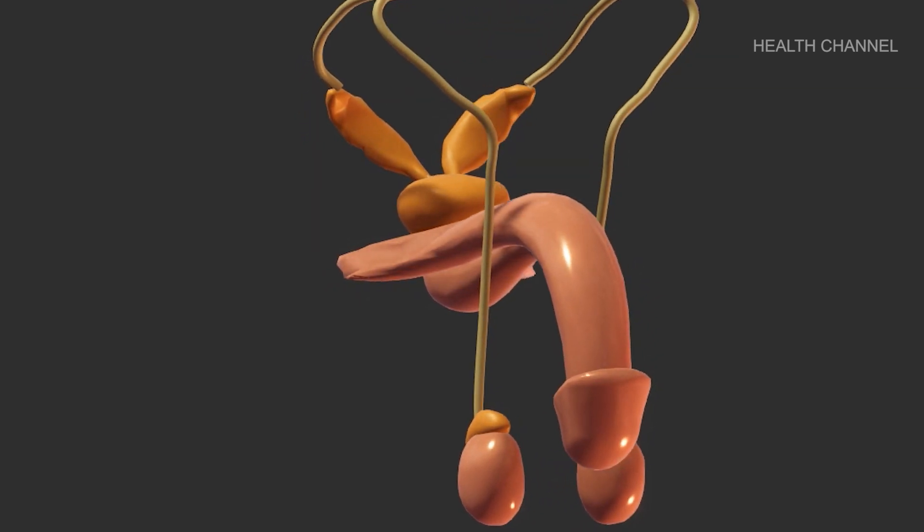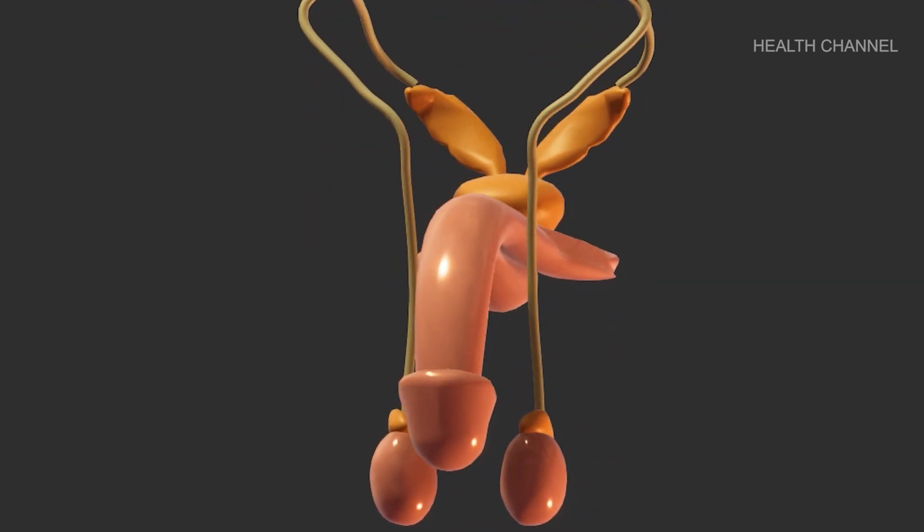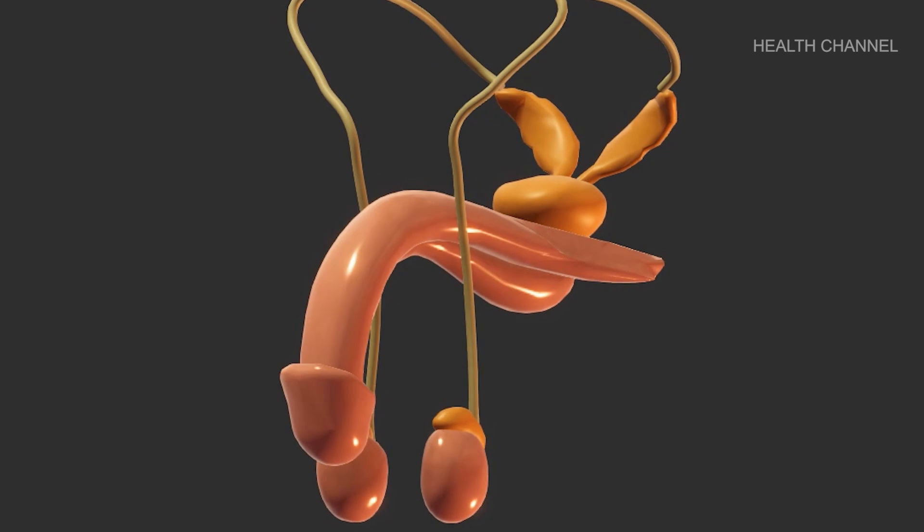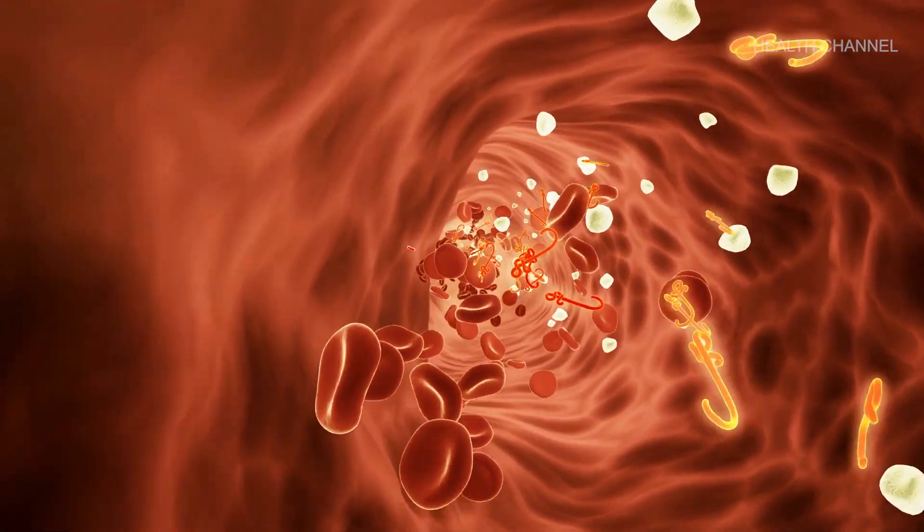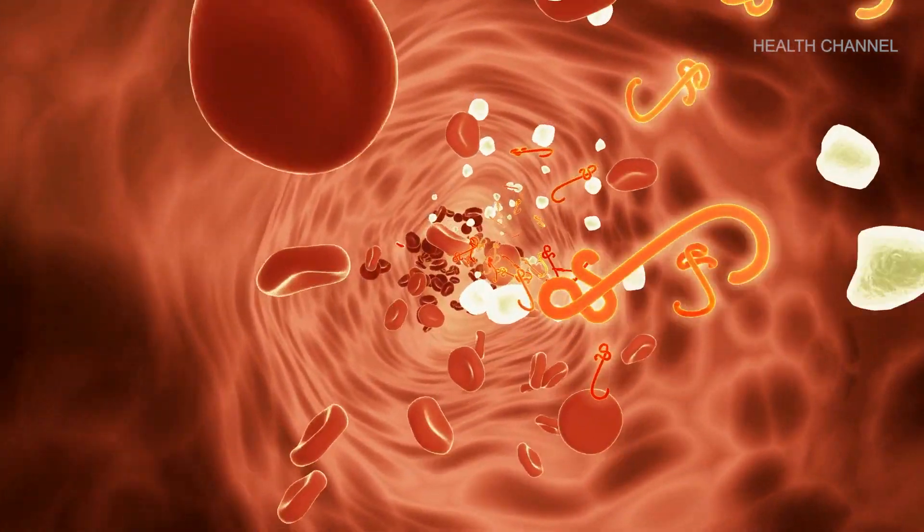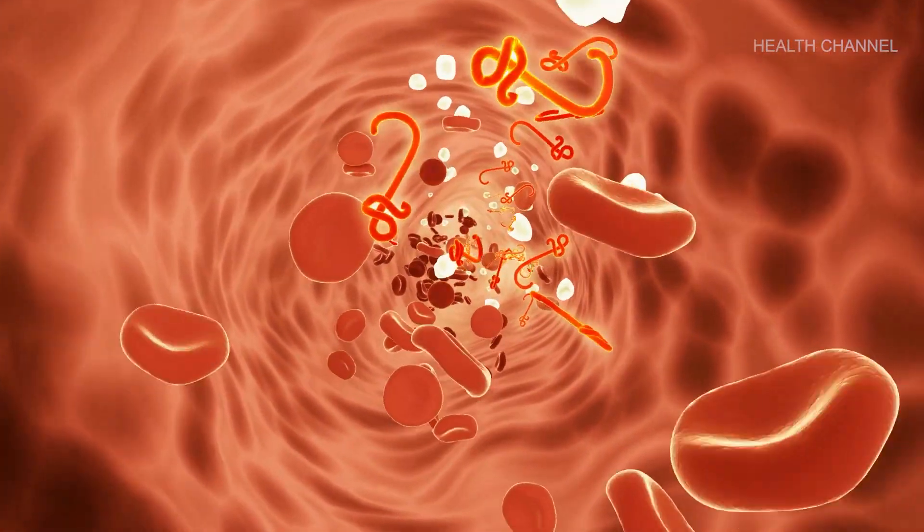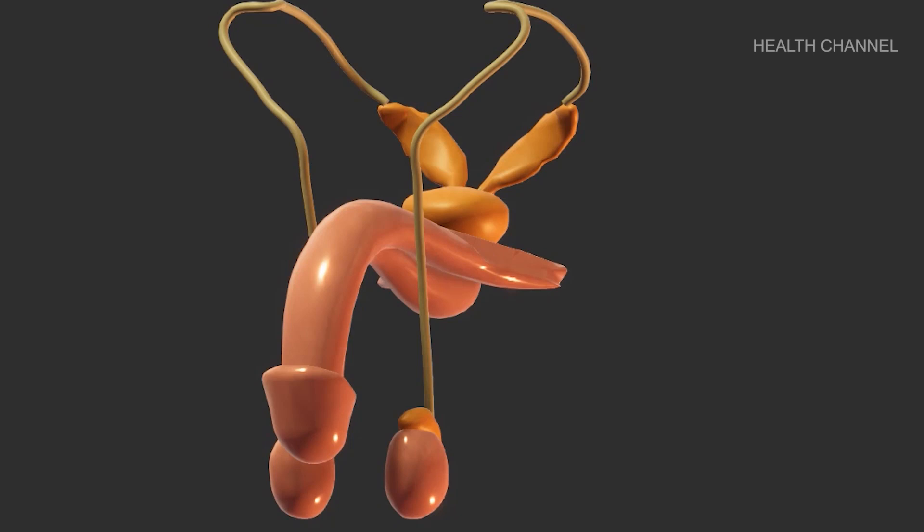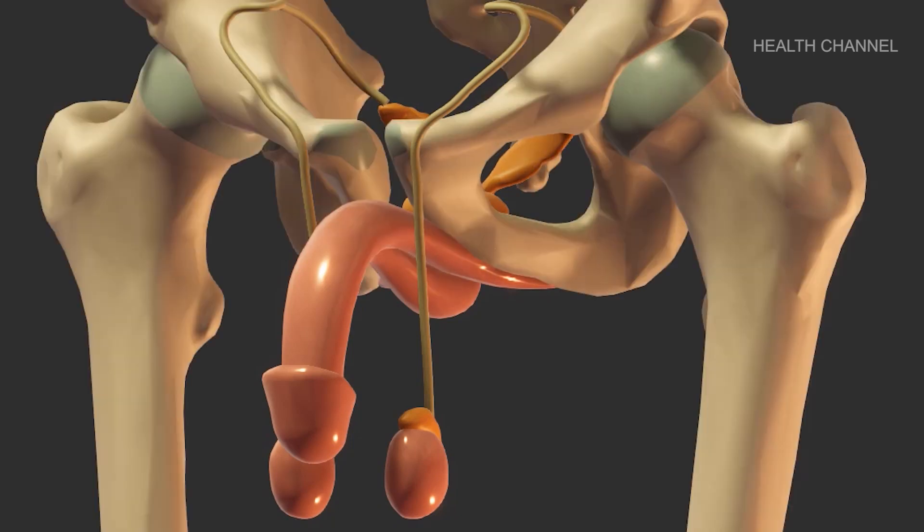Unlike the ovaries, the testes do not lose their ability to produce hormones. If a man is in good health, he may be able to produce sperm well into his 80s and later. Subtle alterations in testicular function can occur as early as 45 to 50 years of age, and more drastically around the age of 70.